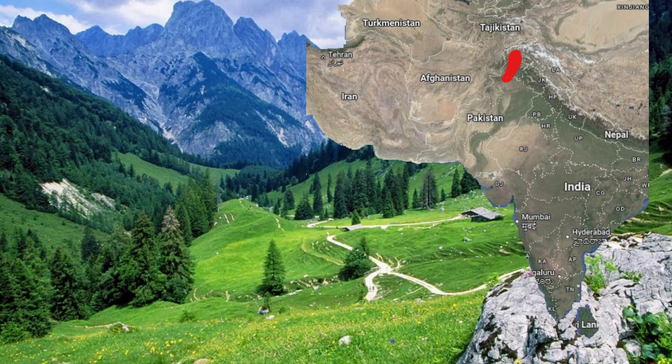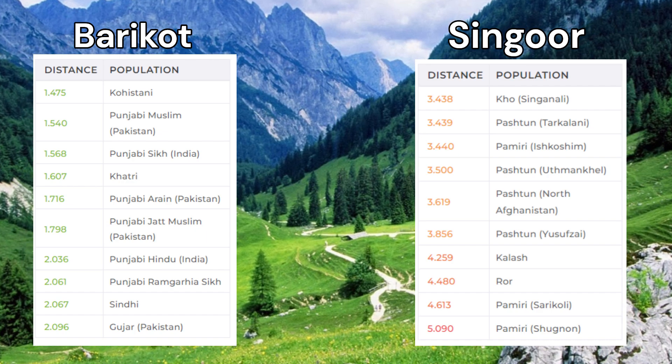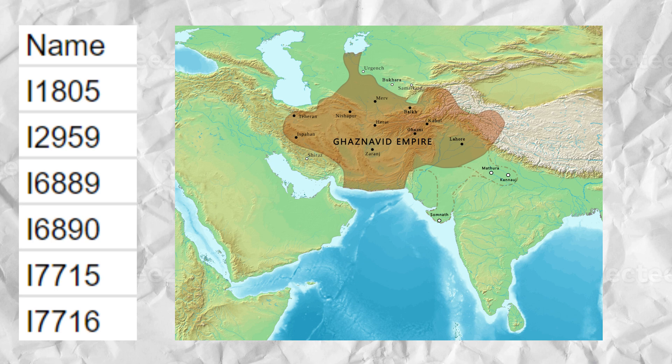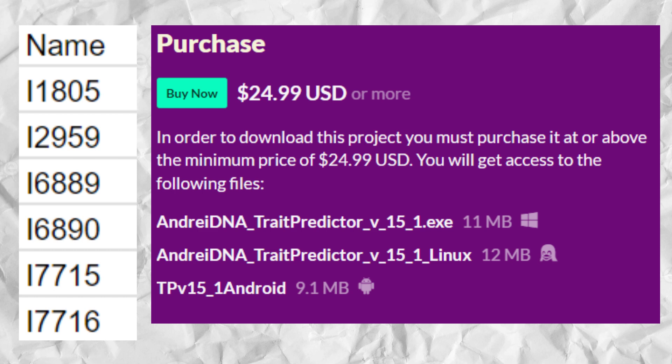The medieval inhabitants of Swatvali of Pakistan fall into two groups: Punjabi-like and Pashtun-like. These six DNA samples gathered are dated to the 10th to 16th centuries AD, meaning they lived during the Persian Ghaznavid Empire, Turkic Ghurid dynasty, and Muslim Delhi Sultanate periods. In this video, we will examine and use Trade Predictor to analyze the results of six Swatvali samples from the medieval period. Links to purchase the raw DNA files in 23andMe format and the Trade Predictor executable will be in the description.